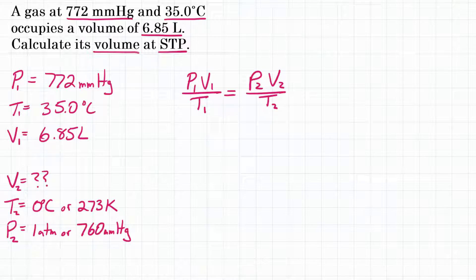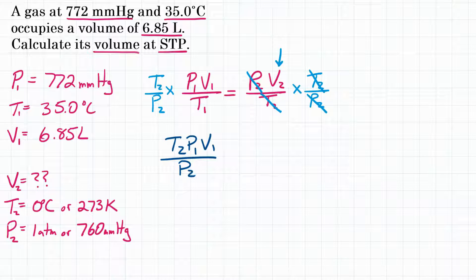We can manipulate our combined gas law to solve for V2. To do that, we multiply both sides by T2 over P2, so that P2 and T2 cancel, leaving us with only V2. So the equation becomes T2P1V1 over P2T1 equals V2.